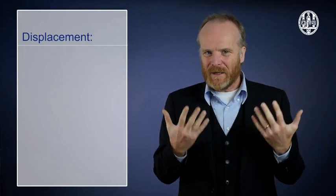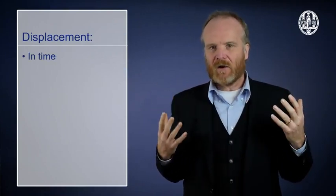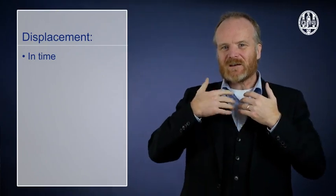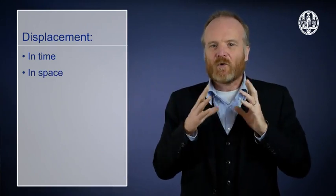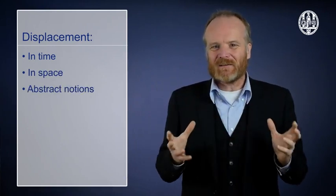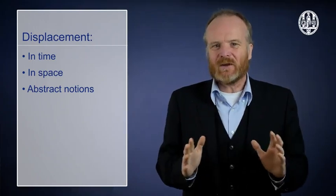The second difference with animal communication is called displacement. We humans can talk about our here and now, but also about things far away, in the past, on the moon. Or even about completely abstract things which we have never seen and will never see.